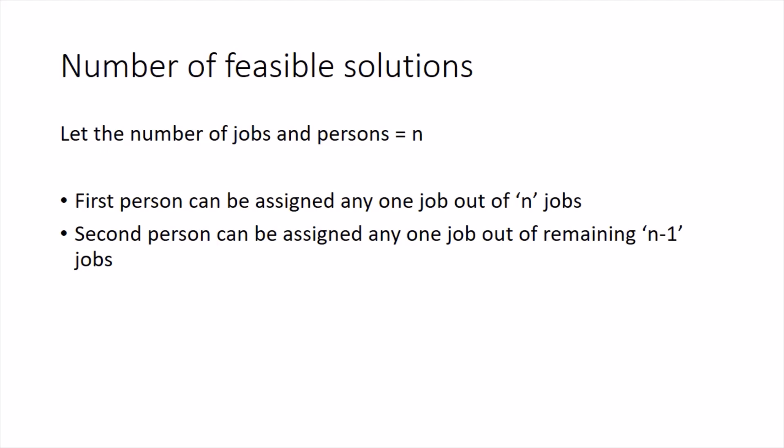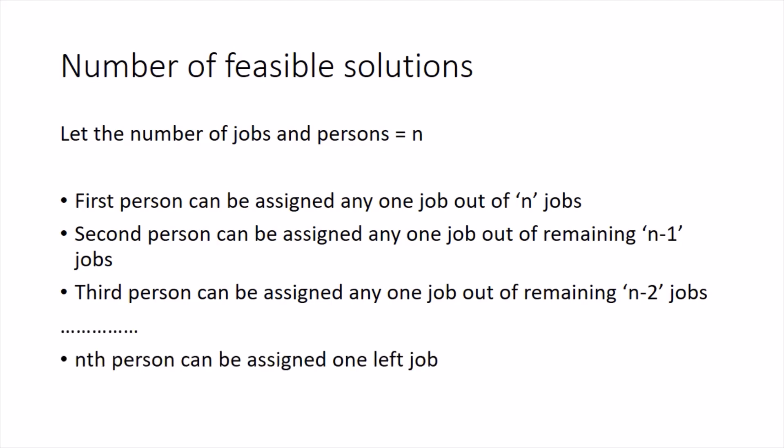Similarly the number of choices for the third person will be N minus 2. You continue the process in this way, you will figure out that the last person or the N-th person will be left with just one choice, he will be assigned just one last left job.